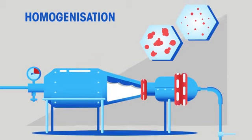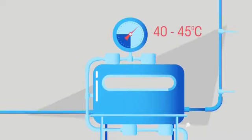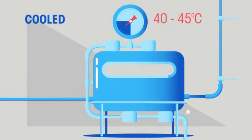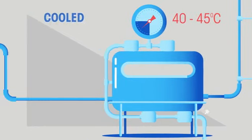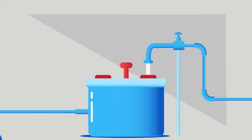So we've sterilized our equipment, then pasteurized and homogenized the milk. Now the mixture is cooled to 40 to 45 degrees Celsius and we add our special yogurt-making bacteria. The mixture needs to be cooled first so that the bacteria aren't killed by the high temperature.